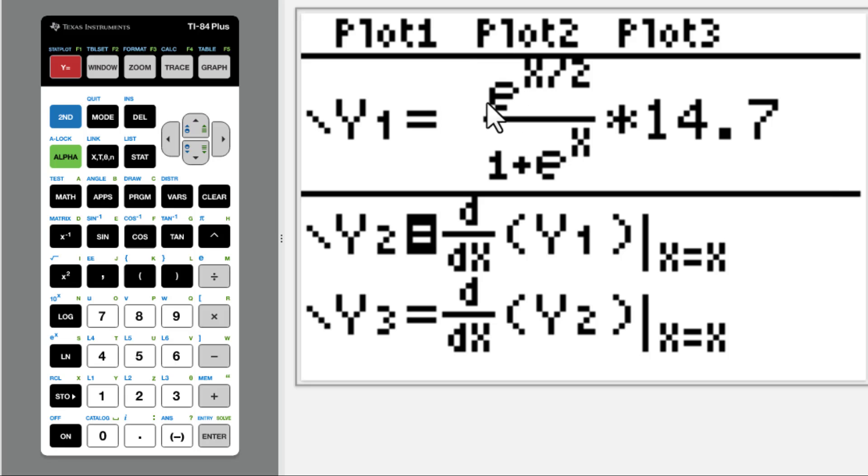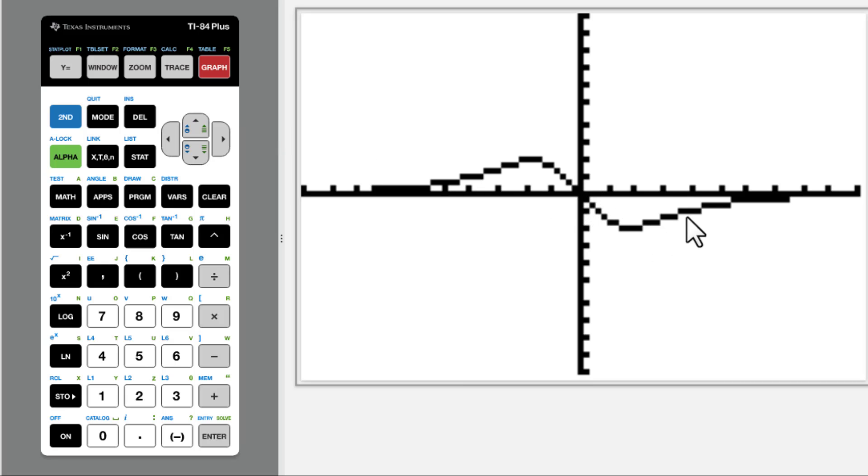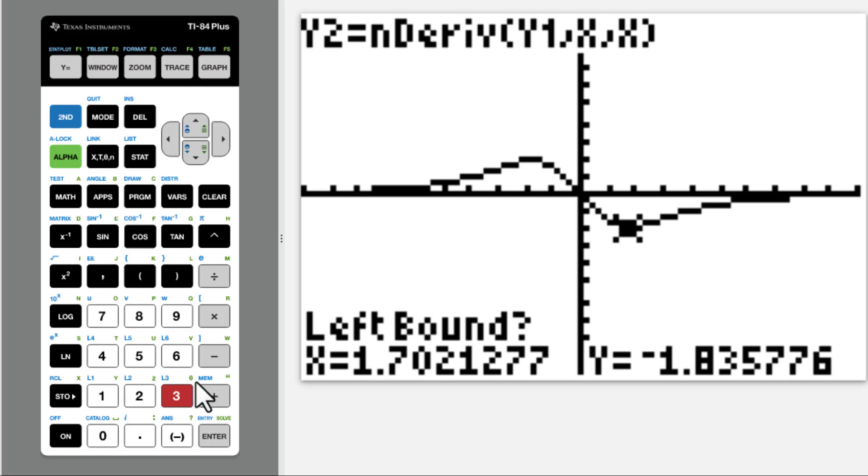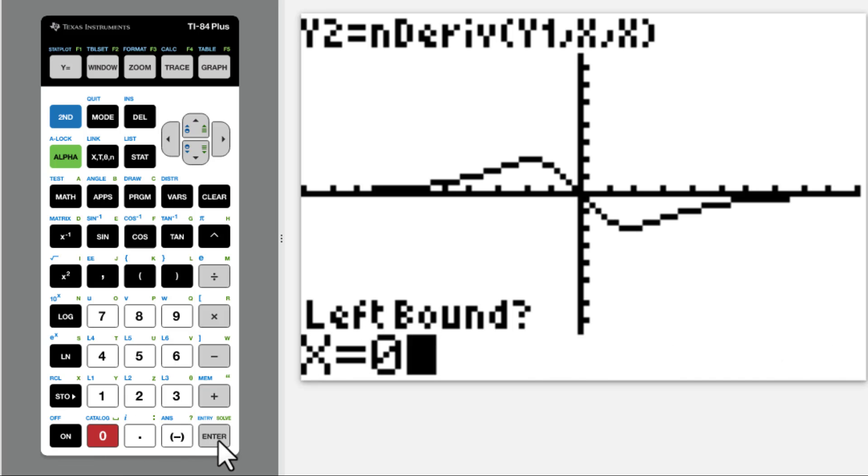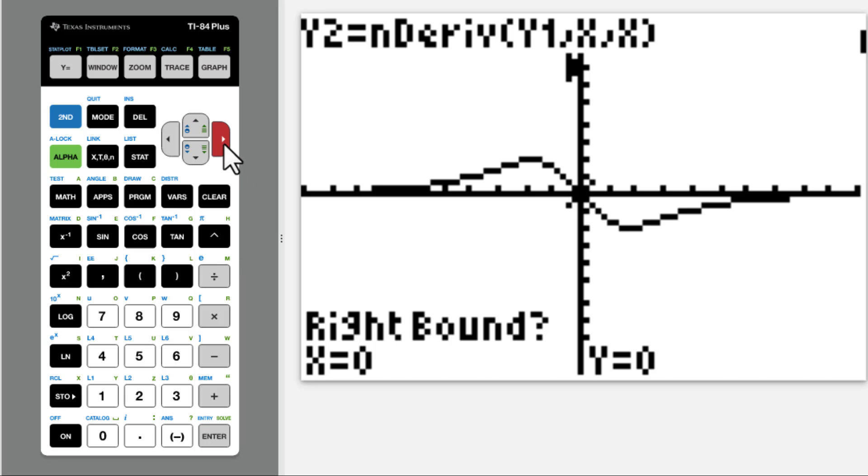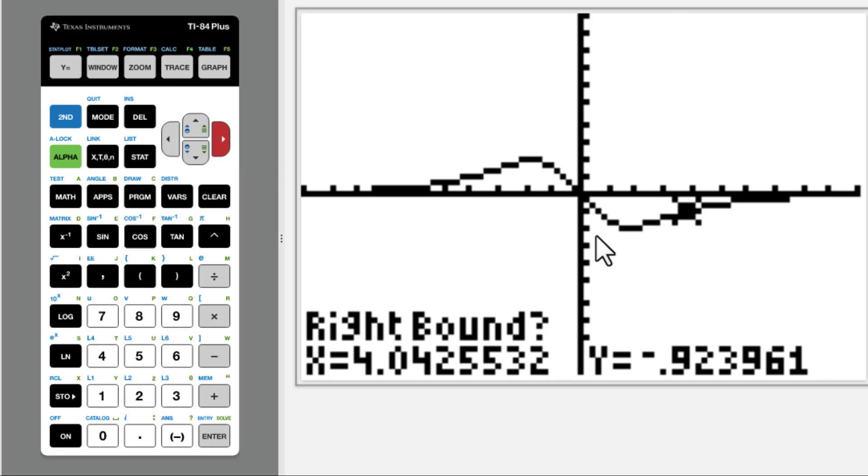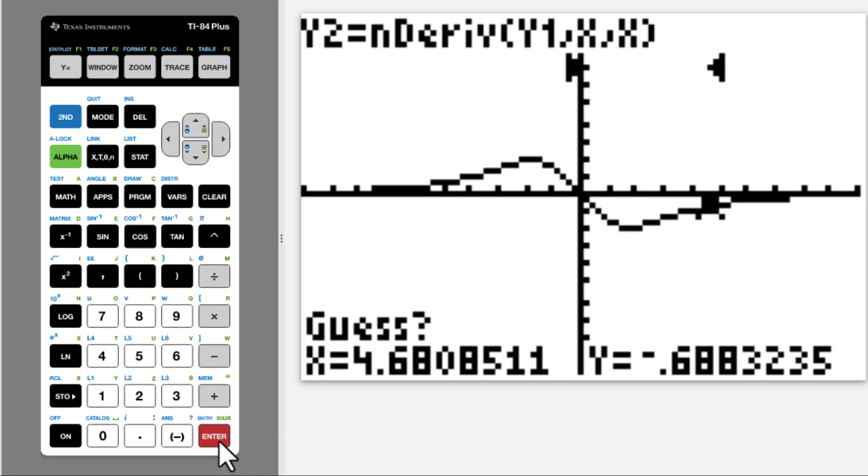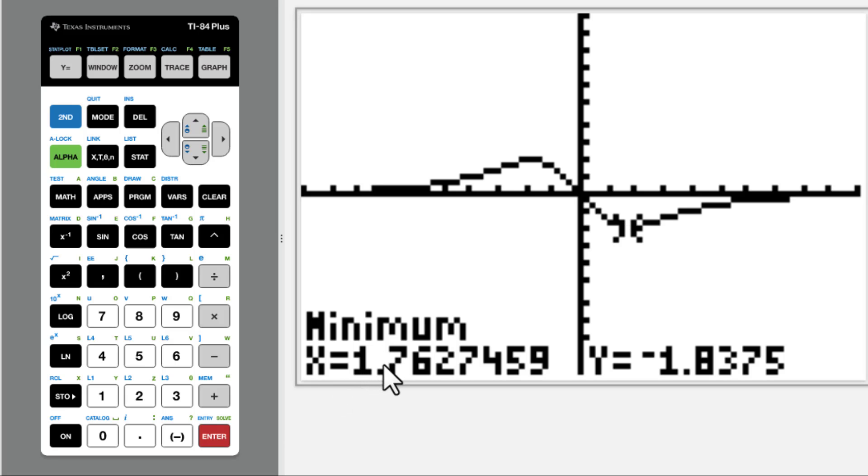So you can either sketch the graph of f prime of x or f double prime of x. We put the f function into y1, the first derivative function into y2, the second derivative function into y3. We only highlight y2, then graph. You can see this is the graph and the minimum value is here. So we go to 2nd trace, go to 3. Left bound is 0, enter. Then move the cursor to the right. Make sure the cursor is on the right side of this minimum value. Enter, enter. x equals 1.76.